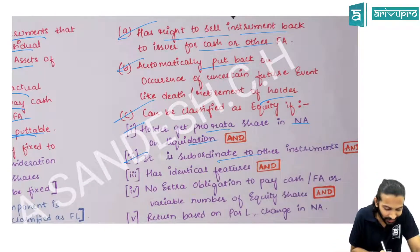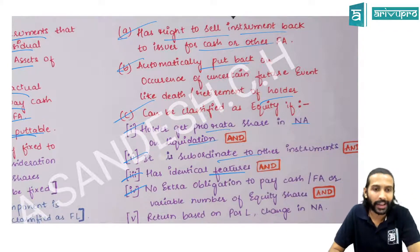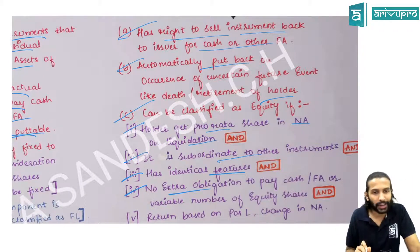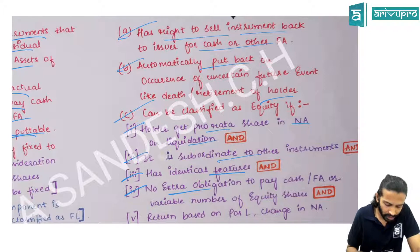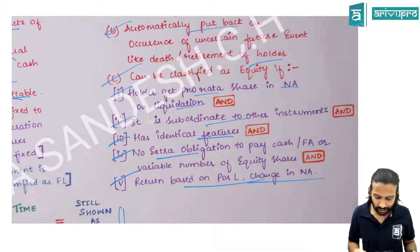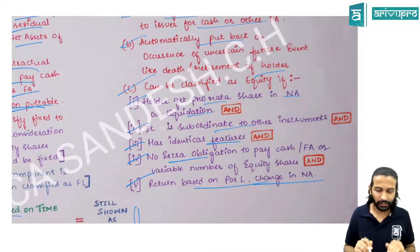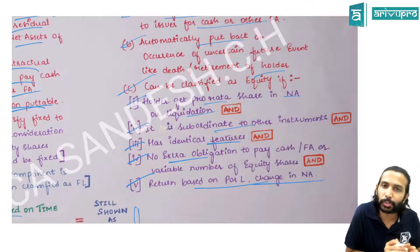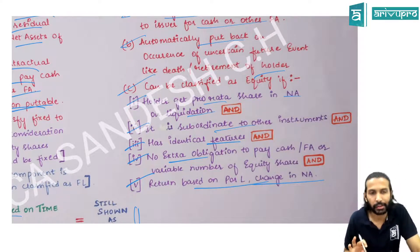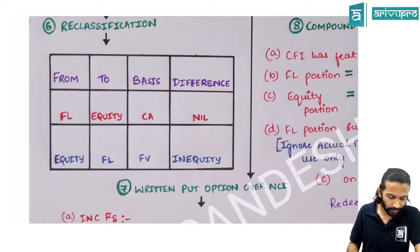The third condition for putable instruments to be classified as equity is that they have identical features. Fourth, other than the obligation to pay cash on put, there should be no extra obligation to pay cash or any other financial asset. Fifth, the return given to putable shares should be based only on changes in net assets, like equity. If these features are satisfied, the putable instrument is classified as equity; otherwise, it is a financial liability.